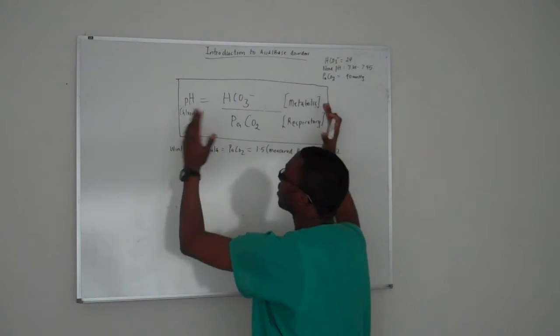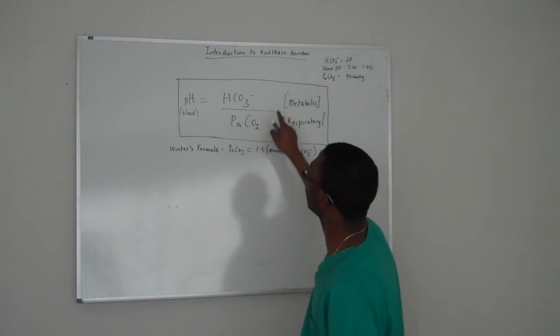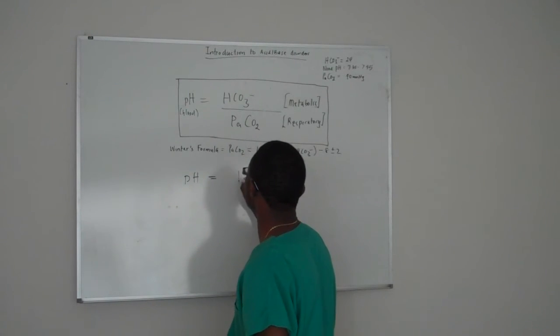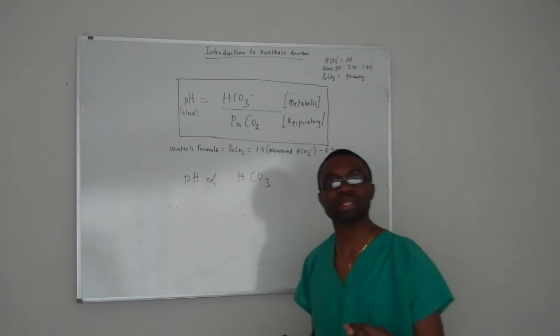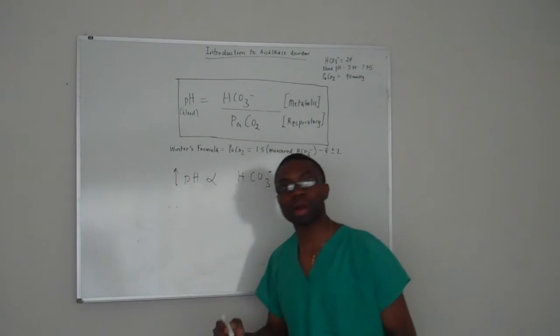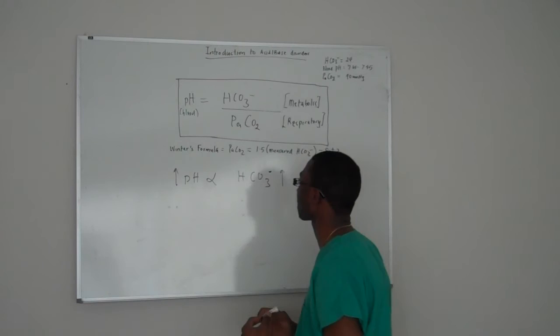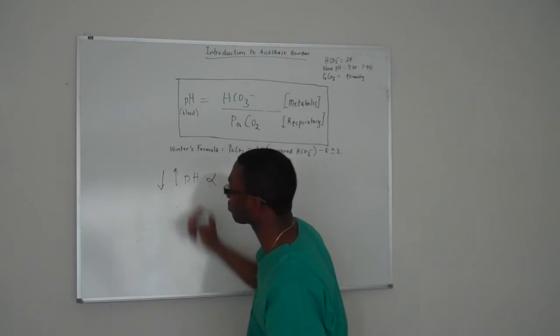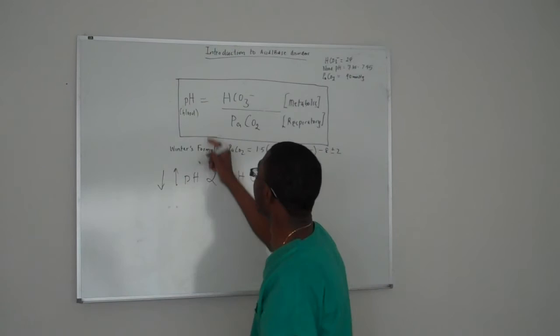Let me tell you about this formula - extremely important. When you have metabolic on top, there is a direct relationship between pH and bicarb. pH is directly proportional to bicarbonate. That means whatever happens to bicarb - if bicarb goes up, automatically pH has to go up. If bicarb goes down, automatically you expect the pH to go down. It's a direct one-to-one correlation.